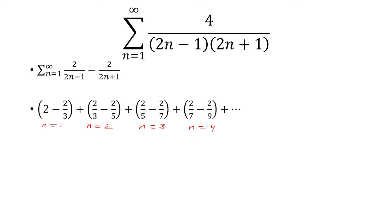So it's pretty obvious here, we have a nice little pattern. Notice that 2 thirds are going to cancel, 2 fifths are going to cancel, 2 sevenths are going to cancel, and eventually 2 ninths, etc. So all that we're going to be left with is 2. And so this sum converges to 2.